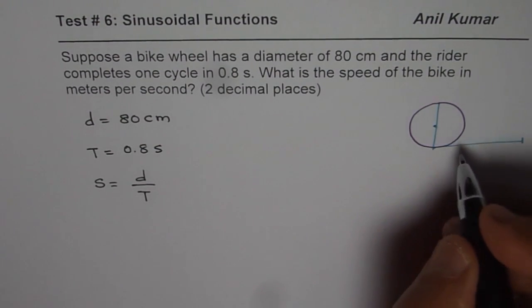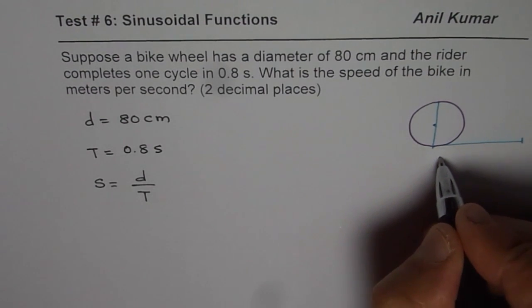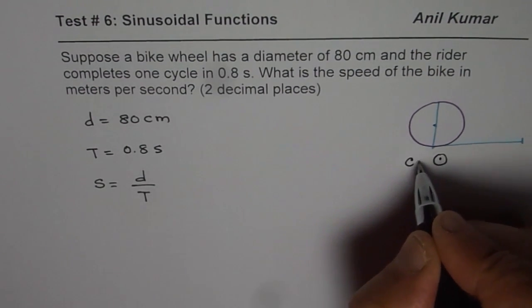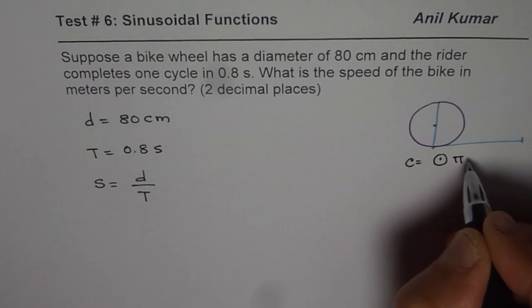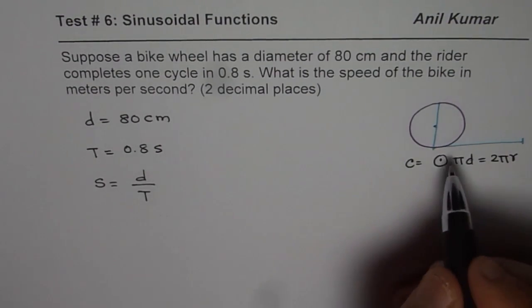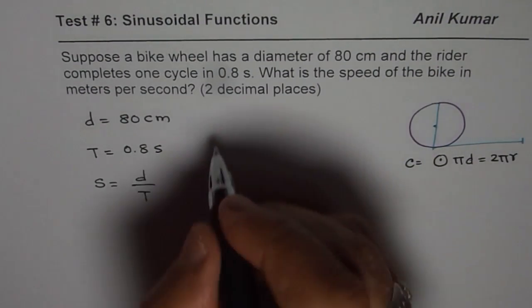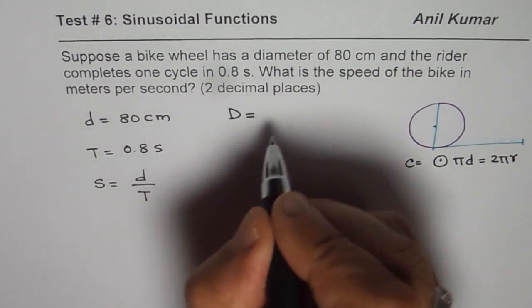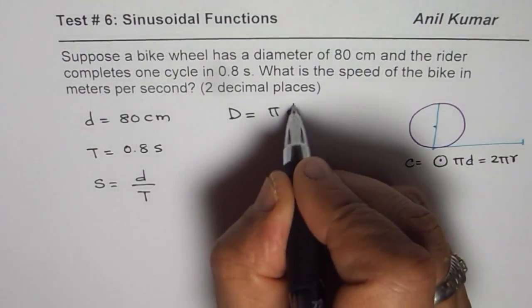Pi times d. The distance is the circumference, which is pi times the diameter or 2πr. We can find the distance covered as D = πd.